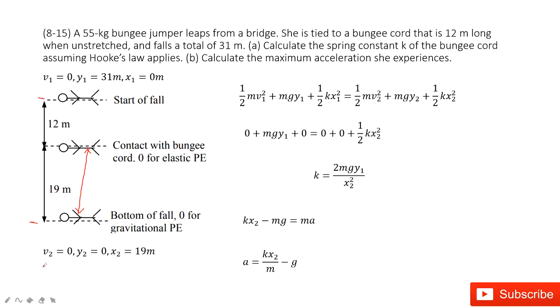And then at the final state, v2 is 0, velocity of 0, and y2 is 0. The extension for the bungee is 19 meters, because from there the bungee starts to extend and finally reaches to 0. It is 19 meters.